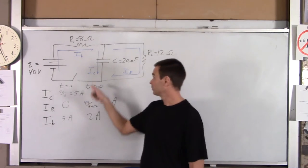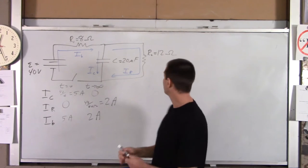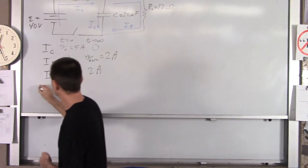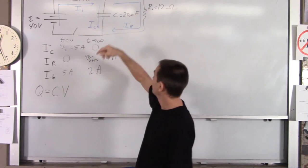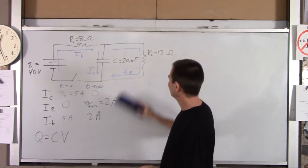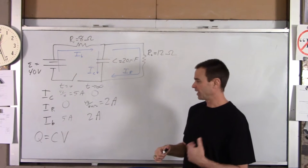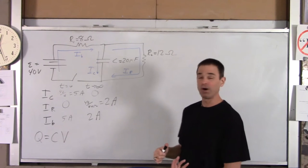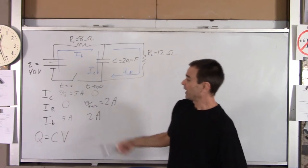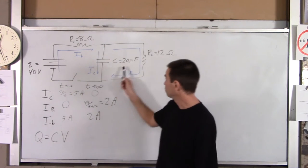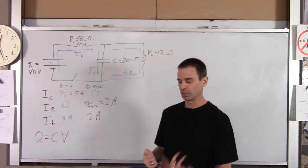We'll also find the charge on the capacitor after a long long time. At zero seconds it's zero — there's no charge on it. After a long long time, Q = C × V. The common error here would be to take the capacitance, which is 20 millifarads, times 40 volts, giving 800 millicoulombs or 0.8 coulombs. But that's incorrect — the voltage of this capacitor never reaches 40 volts.